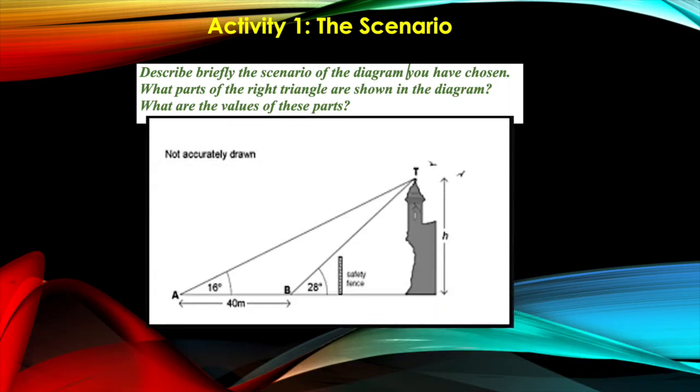Now let us look at this diagram as an example. So what is the scenario shown in the diagram here? If you look at the diagram, it is a scenario of a watchtower with two points A and B, and the height of the watchtower is not given.